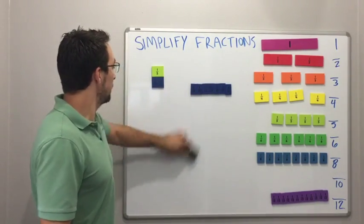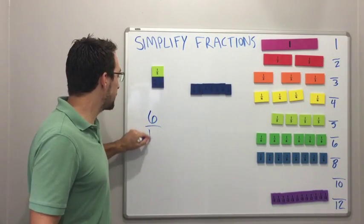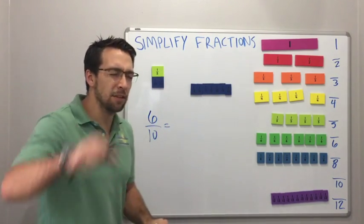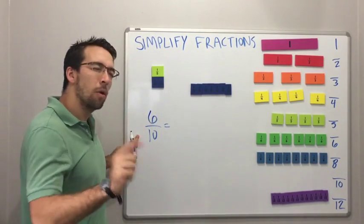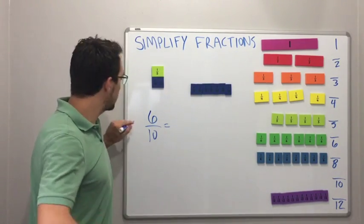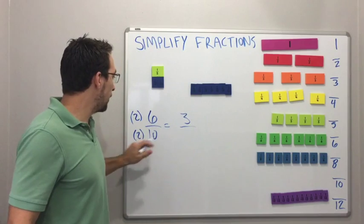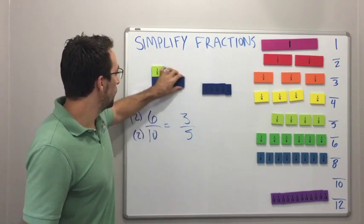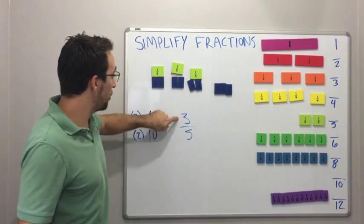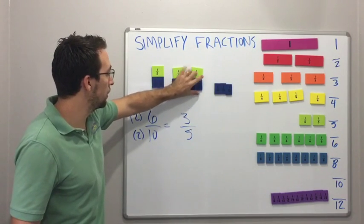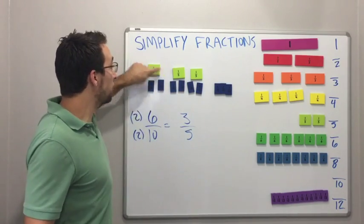Alright, what about now, let's look at 6 out of 10. Equals, is it still 2? 1 times 6, and 2 times 3. Those are my factors for 6. 1 times 10, 2 times 5. Oh, it's just 2. The greatest common factor is 2. So 3 out of 5. Check that out. 2, 4, 6. And we have 3 out of 5. 1, 2, 3. 6 tenths. 1, 2, 3, 4, 5, 6 equals 3 fifths. That's pretty cool.